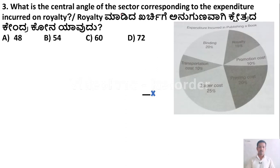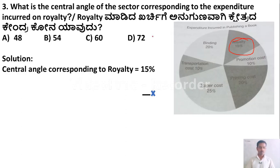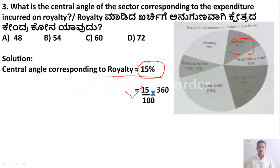What is the central angle of the sector corresponding to the expenditure incurred on royalty? Royalty is 15%. To find the central angle: 15/100 × 360 = 54 degrees. So the right answer is Option B: 54 degrees.